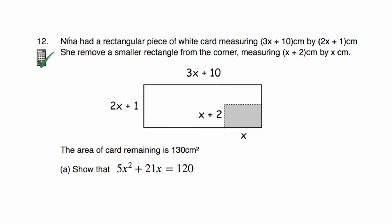Question 12: Nina has a rectangular piece of white card measuring 3x+10 cm long by 2x+1 cm wide. She's removed a corner region measuring (x+2) by x. The area of card remaining is 130 cm². We've been asked to show that 5x squared plus 21x equals 120. The area remaining equals the whole rectangle minus the removed section: (3x+10)(2x+1) minus x(x+2) equals 130.